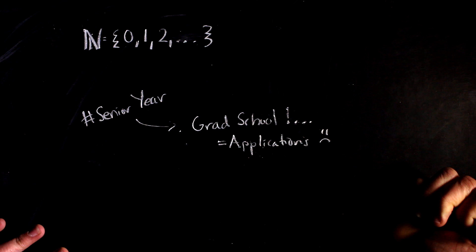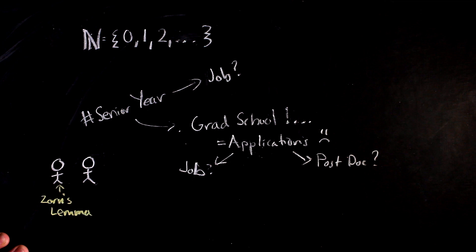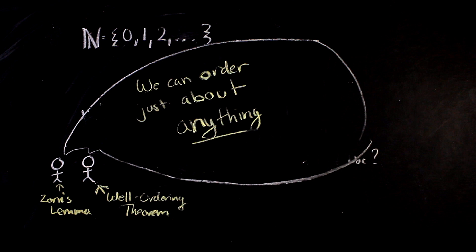Whenever we have a set of things, whether that be a set of numbers or a set of things you should do after you graduate from college, sometimes it's helpful to describe these sets either by ordering or grouping them. Zorn's lemma and the well-ordering theorem, in some sense, guarantee our ability to do so for any set. But before we get there, we should talk about the ways you could relate things in your set.